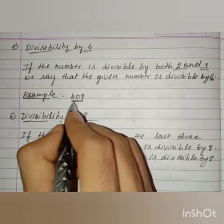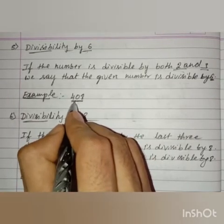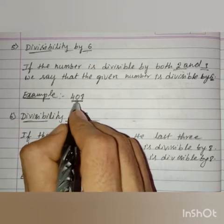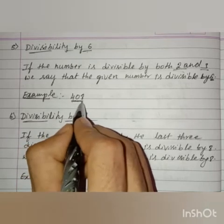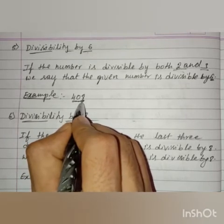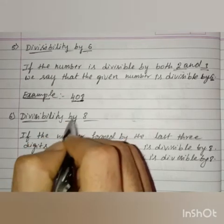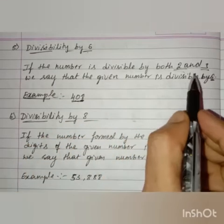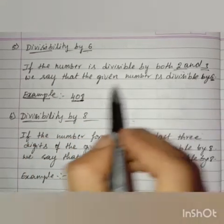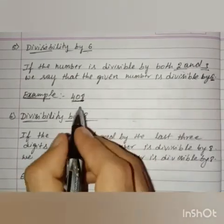Now let us see whether the given number is divisible by 2 or not. It is divisible by 2 because the ending digit is even, so it is divisible by 2.